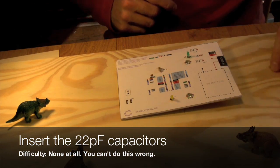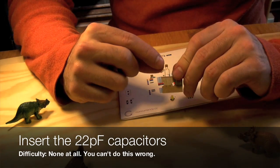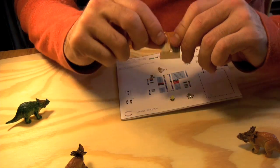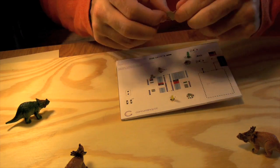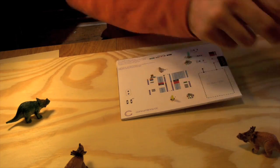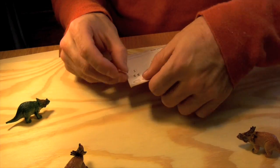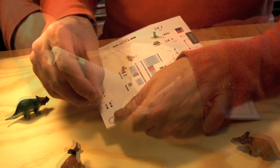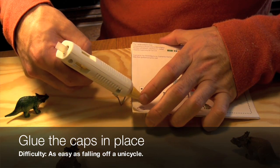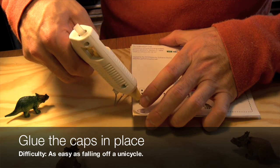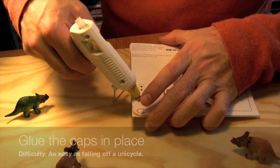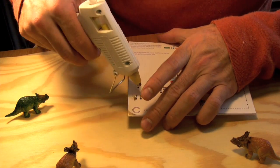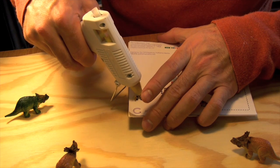While we're at it, we'll continue with components that have neither a right nor a wrong. So we'll do the two 22 picofarad capacitors. Those are down on the lower left of the board. Remove them from their holder, poke them through, and bend the legs over. Now go ahead and glue all of those capacitors into place. Because we're gluing on the top, you shouldn't have to worry about getting too much hot glue everywhere.